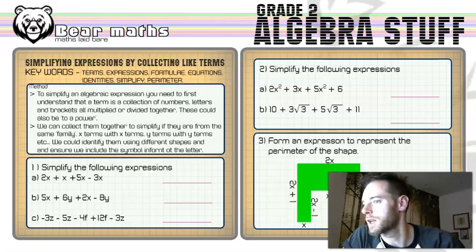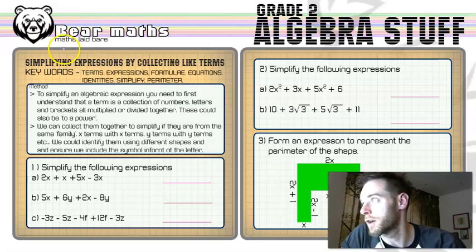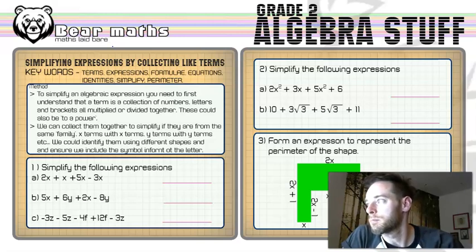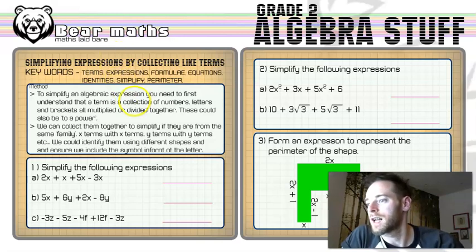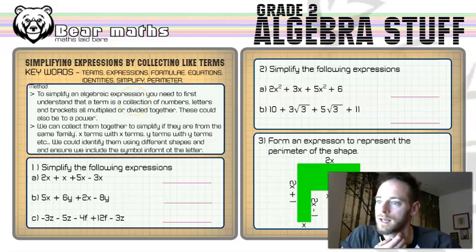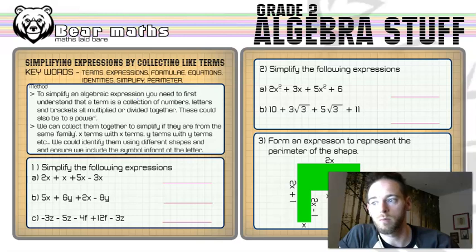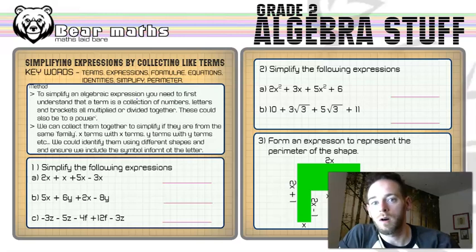This video specifically is on simplifying expressions by collecting the like terms. Now, keywords: Terms are a collection of numbers, letters, brackets, multiplied and divided together, and they could also be to powers. Expressions are a collection of these terms. So when you collect terms together, you create an expression in algebra. A formula is an expression but it's equal to something — it could be equal to a term or another expression. An equation is something that you are able to solve.